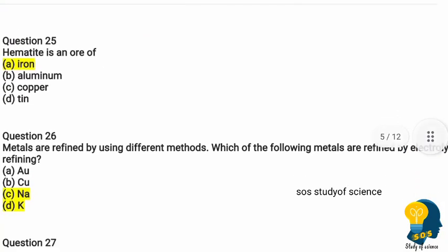Question twenty-five: hematite is an ore of — option A iron, option B aluminium, option C copper, option D tin. The correct answer is option A, iron. Hematite is a heavy and hard oxide mineral, also called ferric oxide, which constitutes the most important iron ore.